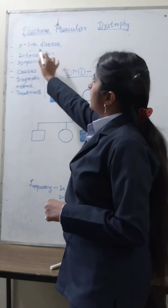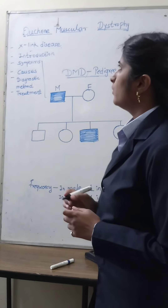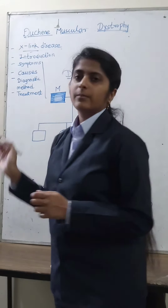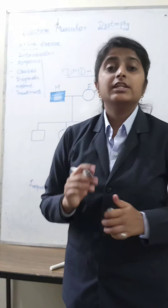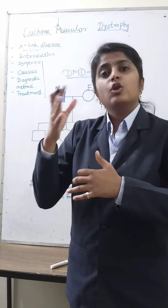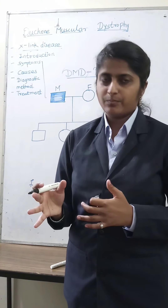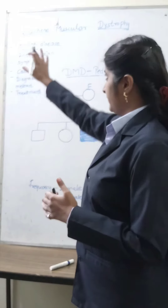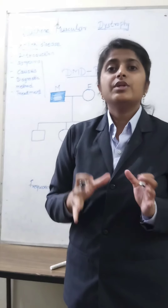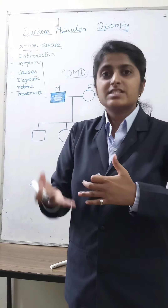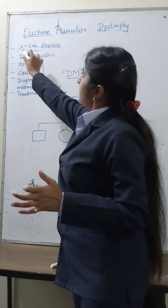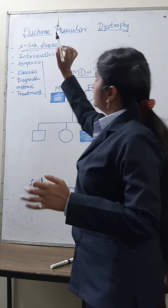Now what is X-linked? X-linked means the traits or genes which are located on the X chromosome are called X-linked, and the mutation that takes place in that is called an X-linked disease.